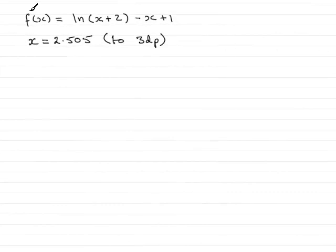Now, in this part of the question, we've already got f of x equals the natural log of x plus 2 minus x plus 1, and the root of this equation we've got to show is 2.505 to 3 decimal places. So, how are we going to do this?